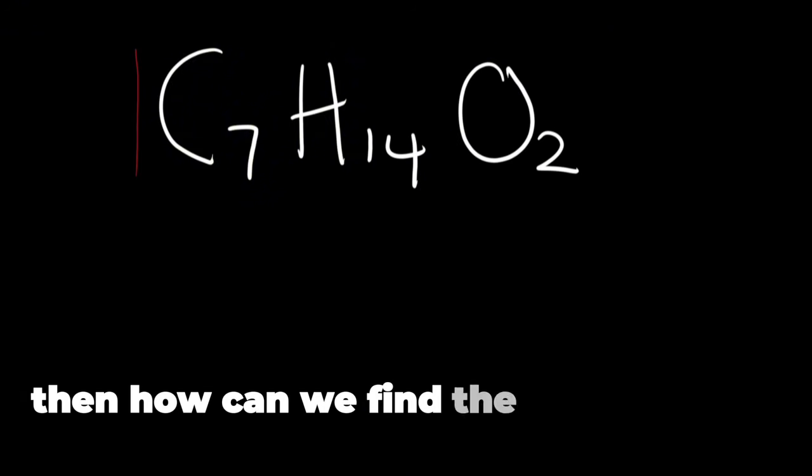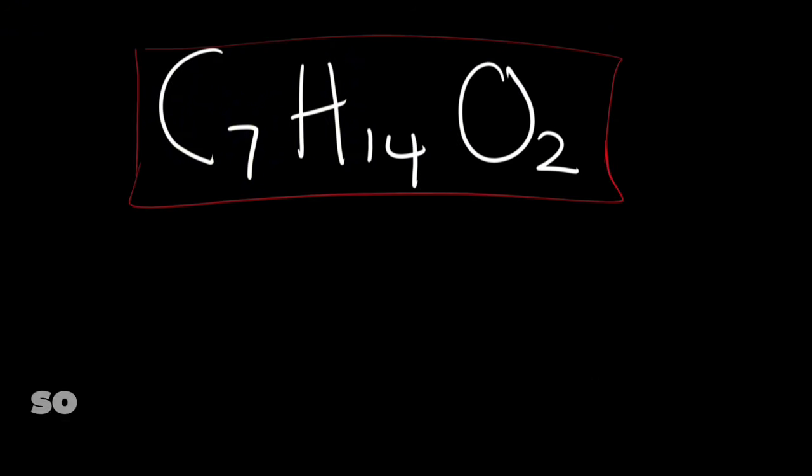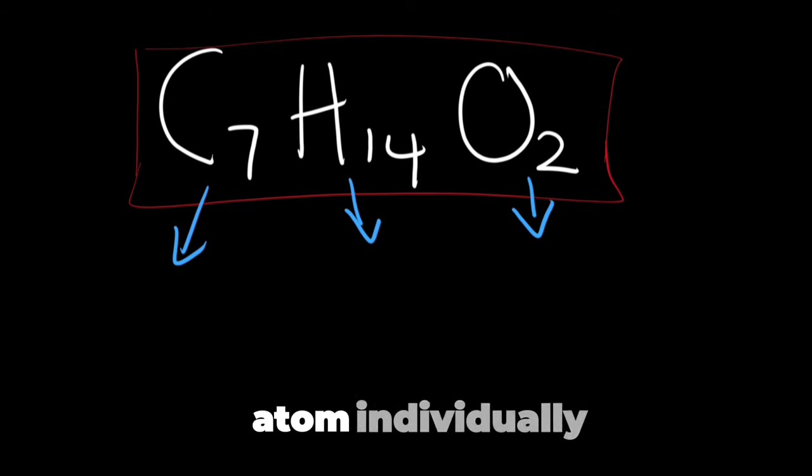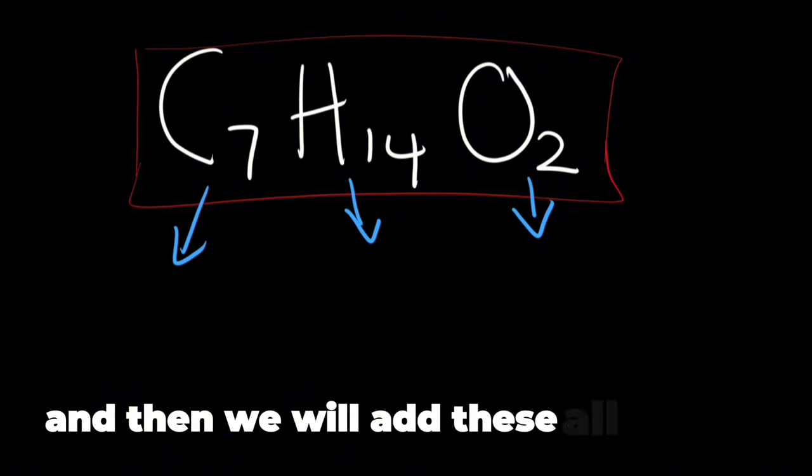If you have for example C7H14O2, then how can we find the molar mass of this compound? So what will you do? You will find the molar mass of each atom individually and then we will add these all together.